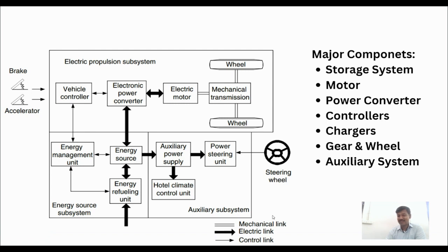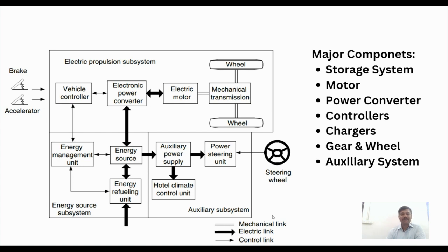In the previous session we learned about the five subsystems of electric vehicle: energy source system, electric propulsion subsystem, auxiliary subsystem, mechanical control subsystem, and charging subsystem. The major components of electric vehicle are: control system, electric motors, power converters, controllers, chargers, gears and wheel, and auxiliary systems.